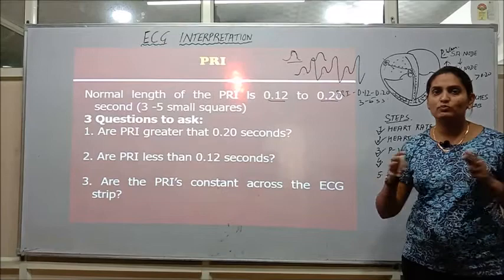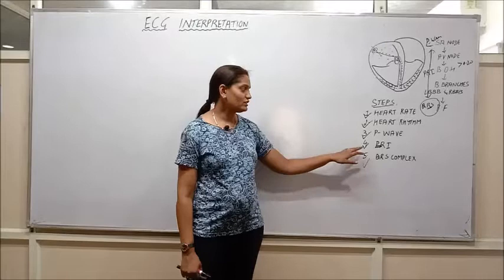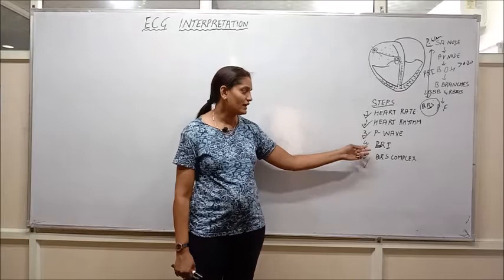So this was the basic interpretation of how do we find out abnormalities in the PR interval. And in the next class we will be seeing to find out the interpretation of QRS complex in the ECG. Thank you.